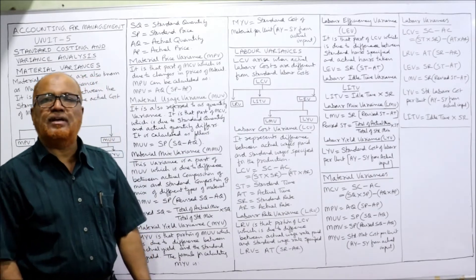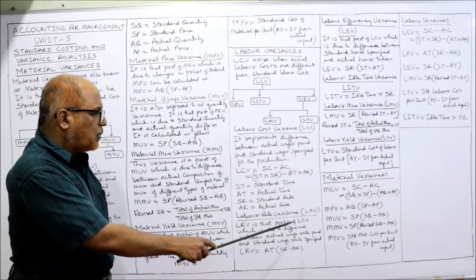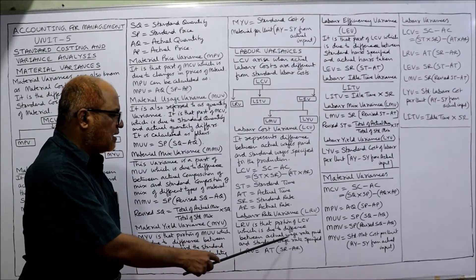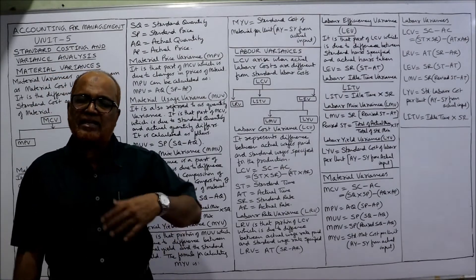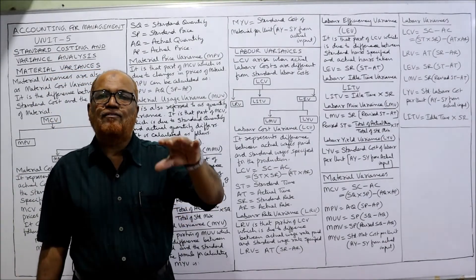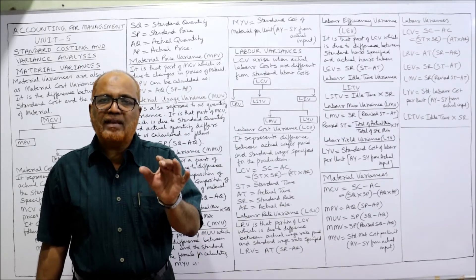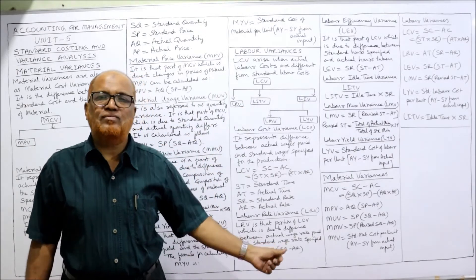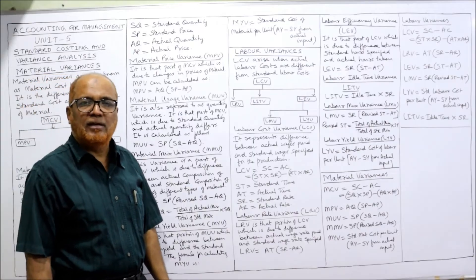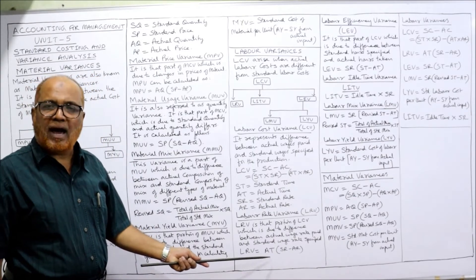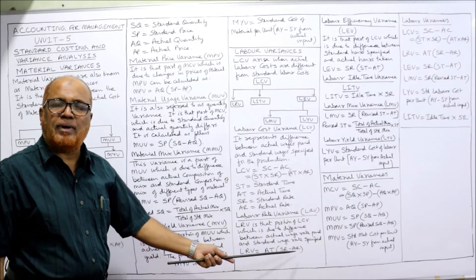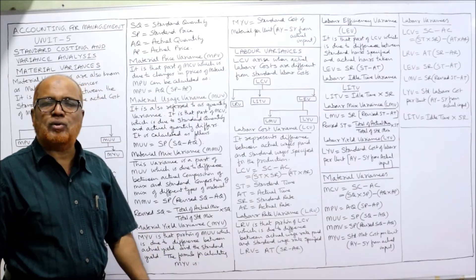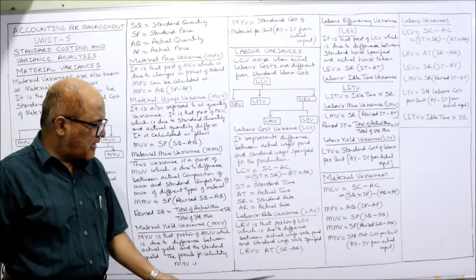The next is labor rate variance, LRV. LRV is that portion of LCV which is due to the difference between the actual wage rate and the standard wage rate specified. If the wage rate we expected differs from what we actually paid, this variance arises. Formula: LRV = AT × (SR − AR). Actual time multiplied by the difference of standard rate minus actual rate.